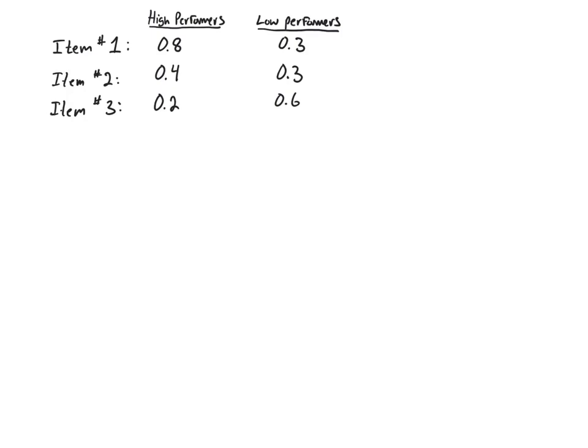Piggybacking on the last video where we described how to actually calculate the index of discrimination, let's talk about what value we get. When we calculate the index of discrimination, remember we find the high-performing group, the low-performing group, and that tends to be the top and bottom 27% respectively.